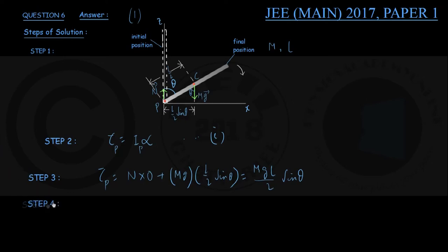In step number 4, let us find moment of inertia I P of the rod about this point P. For that we require the parallel axis theorem. We know that I equals I CM plus M D squared.